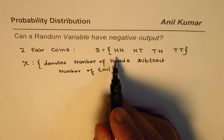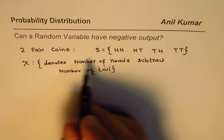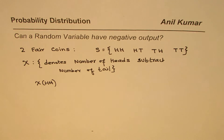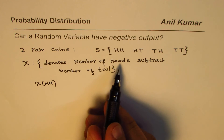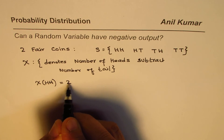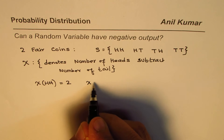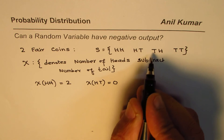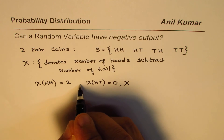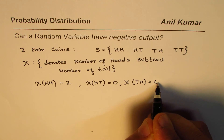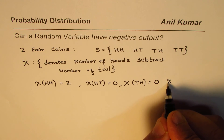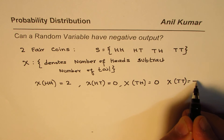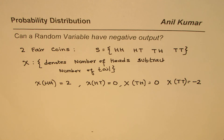Let us see what output we get. For two heads, the difference between heads and tails is 2, since there is no tail. When we have head and a tail, both are one each, so the difference is 0. In the case of tail and head, the difference is also 0. And in the case of two tails, the difference is 0 minus 2, which is minus 2.